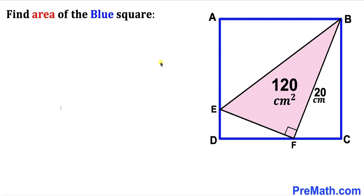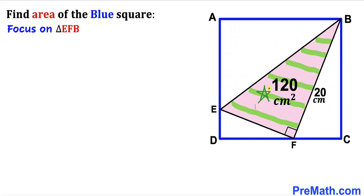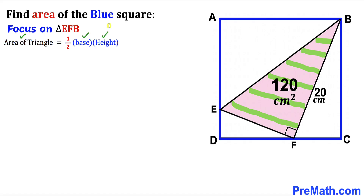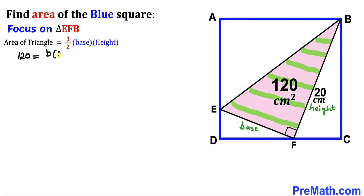Let's get started. In our first step, let's focus on right triangle EFB, whose one side length is 20, and calculate the other side length EF. Recalling the area of a triangle formula: area equals one half times base times height. In our case, the area is 120 and the height is 20, so: 120 equals base B times 20 divided by 2.